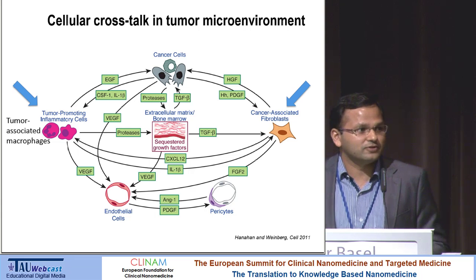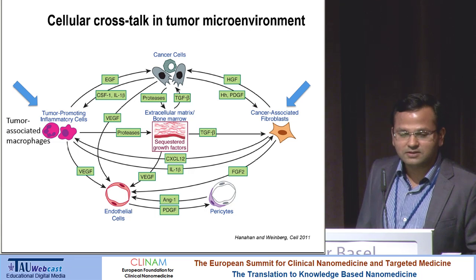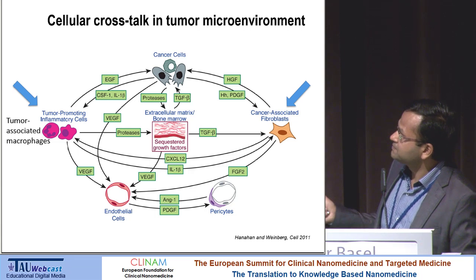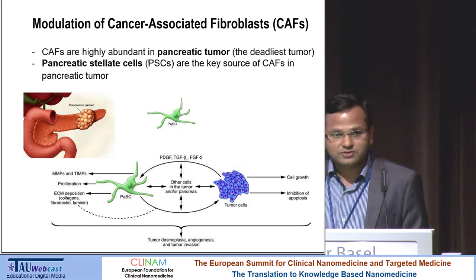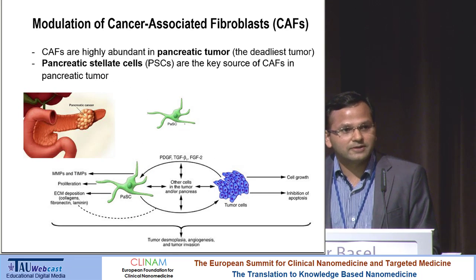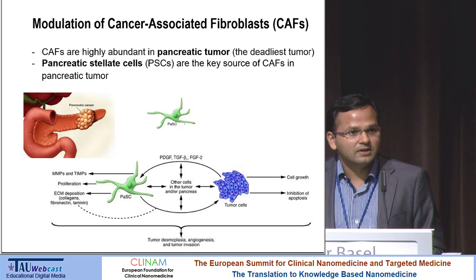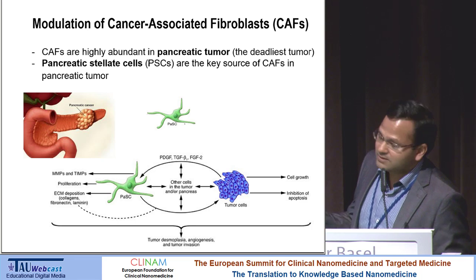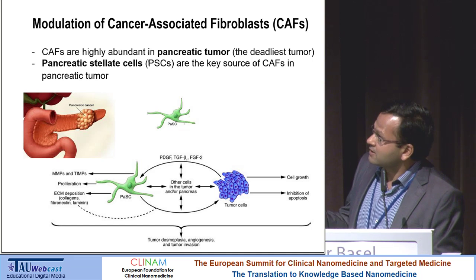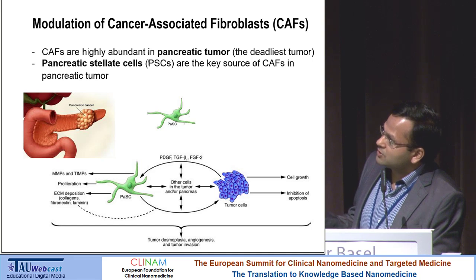I will give examples of these two cell types — how we are targeting them and how we are designing therapeutics against them. First, we go for the cancer-associated fibroblasts. They are present in almost all tumors at different percentages. In pancreatic cancer, they can occupy up to 80 to 90% of the whole tumor, which is why I'm really focused on pancreatic cancer in terms of targeting cancer-associated fibroblasts.